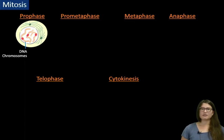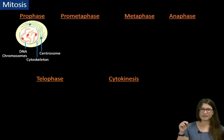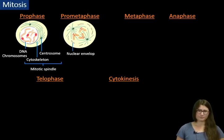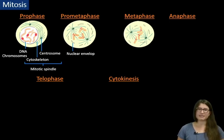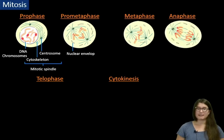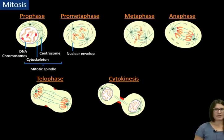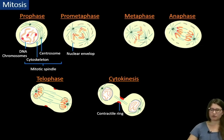During prophase, DNA condenses, centrosomes are moved to the cell poles, and the cytoskeleton radiates out of these centrosomes, forming a mitotic spindle. During prometaphase, the nuclear envelope breaks down. At metaphase, chromosomes align at the cell equator and attach to the mitotic spindle. At anaphase, the sister chromatids migrate to the opposite poles of the cell. Then comes telophase, where a new nuclear envelope is formed around every set of chromosomes and the DNA decondenses. Finally comes cytokinesis, where a contractile ring formed from the cytoskeleton separates the two plasma membranes of the daughter cells.